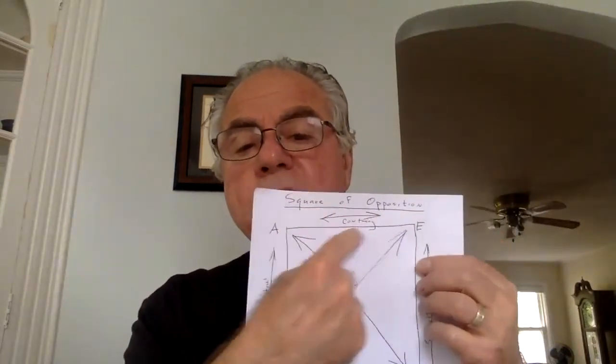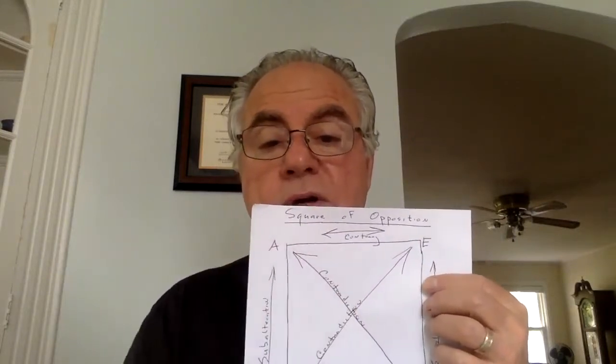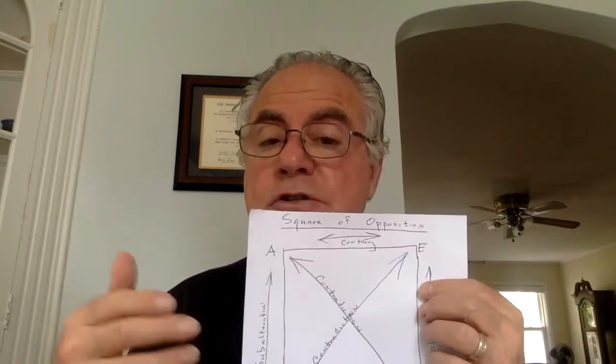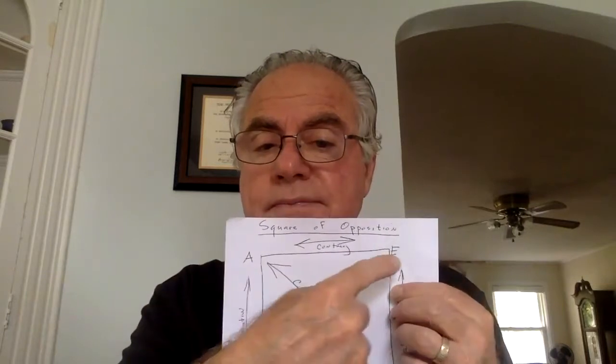After learning contradictions, go to the top of the square — that's called contraries. Contradictions are different from contraries. The A and E propositions are contraries. Here's what you have to remember about contraries: they cannot both be true, but they might both be false. If you know A is true, E has to be false. If you know E is true, A has to be false. But what if A is false? Then E is undetermined. Arguing that something is undetermined can be a useful tool.